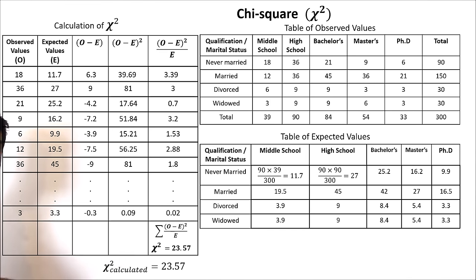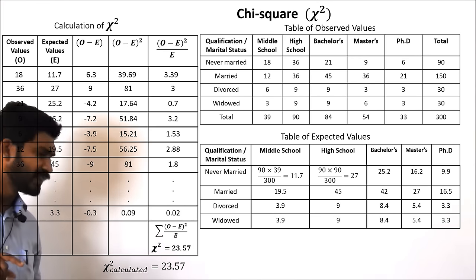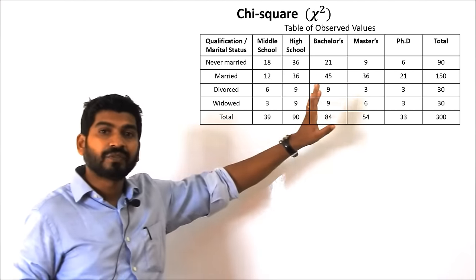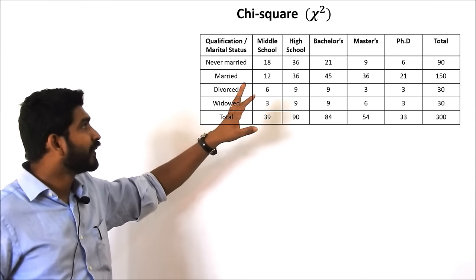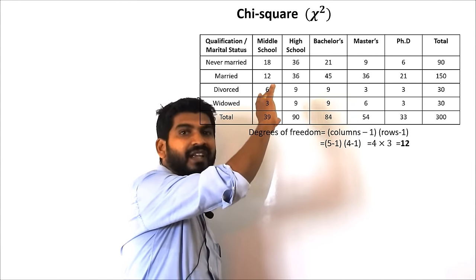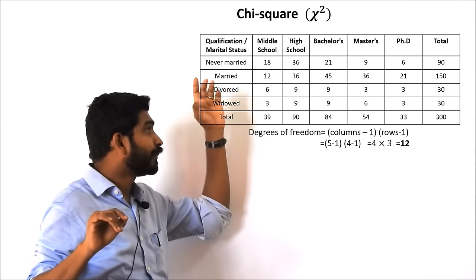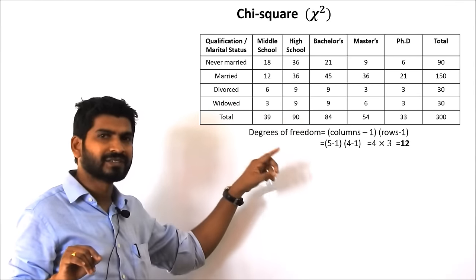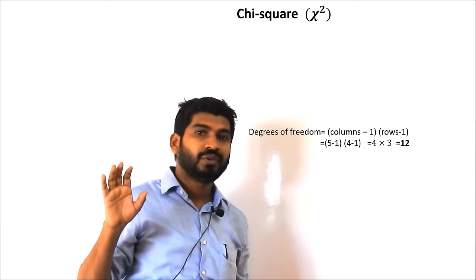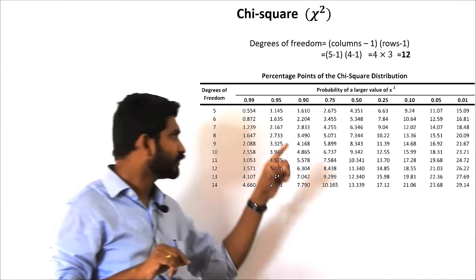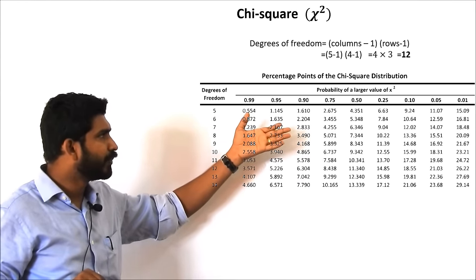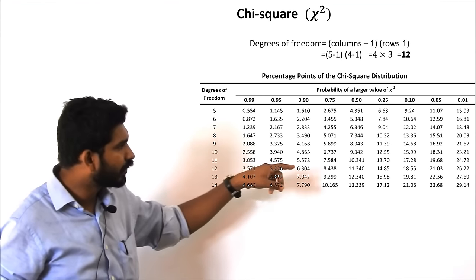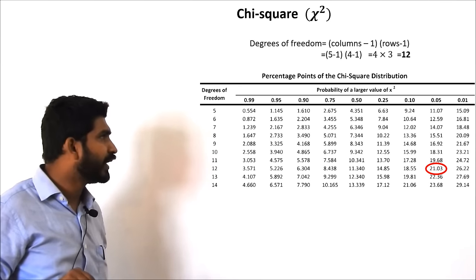Once the table is complete, the total of the last column — that is (observed minus expected)² divided by expected — is called the calculated chi-square value. We also need to compare this with the tabular value of chi-square. For the tabular value, we need to find the degrees of freedom. In the original question there were 5 columns for the level of education and 4 categories for marital status. So the degrees of freedom is (5 minus 1) into (4 minus 1), which comes out to be 12. Looking up the chi-square table for 12 degrees of freedom and a significance level of 0.05, the tabular value comes out to be 21.03.